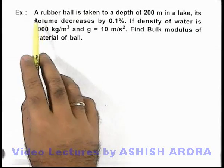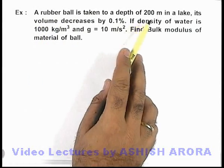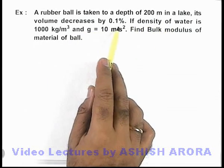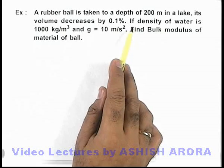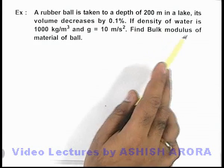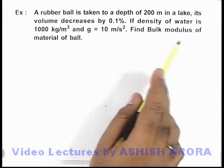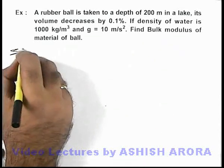In this example, a rubber ball is taken to a depth of 200 meters in a lake. Its volume decreases by 0.1 percent. We are given that the density of water is 1000 kg per meter cubed and g is taken to be 10. We are required to find the bulk modulus for the material of the ball.